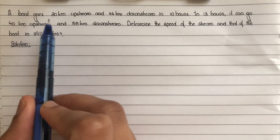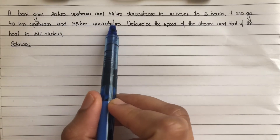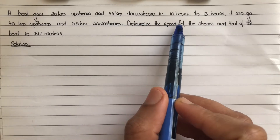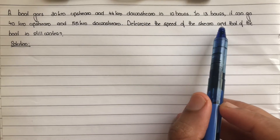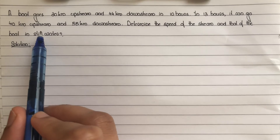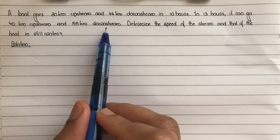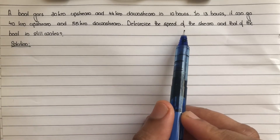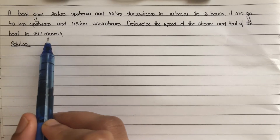A boat goes 30 km upstream and 44 km downstream in 10 hours. In 13 hours, it can go 40 km upstream and 55 km downstream. Determine the speed of the stream and that of the boat in still water.